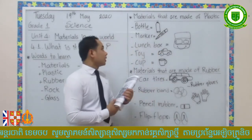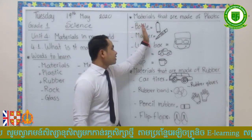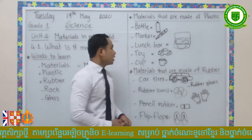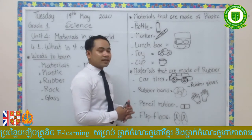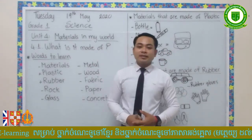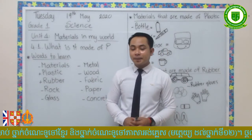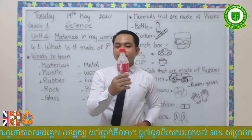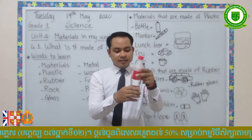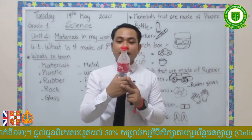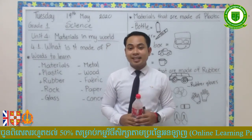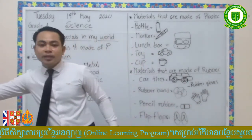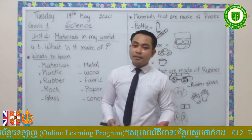We are going to talk about materials that are made of plastic. What are the materials that are made of plastic? Can you give me some examples? You know what plastic is, right? This bottle is made of plastic — you can hear it. This is a bottle of water and it is made of plastic. Can you think of some materials and write them down in your notebook?